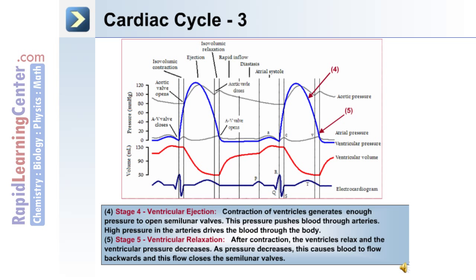Stage 5 is ventricular relaxation. After contraction, the ventricles relax and the ventricular pressure decreases. As pressure decreases, this causes blood to flow backwards and this flow closes the semilunar valves.